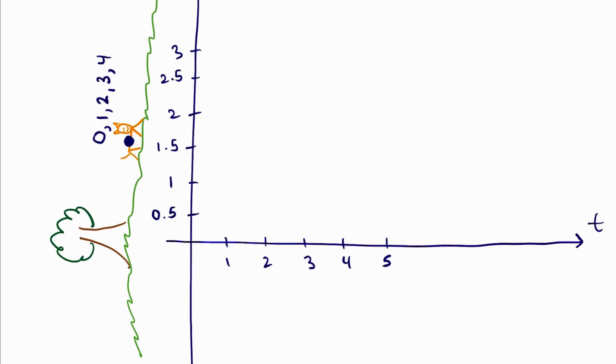Okay, so in order to make the position time graph, we're going to be seeing where the cheetah is for each given time that we're interested in. So for time zero, the cheetah is 1.5 meters away from the tree to the right.